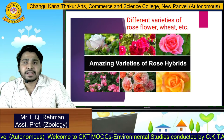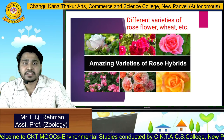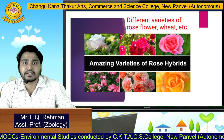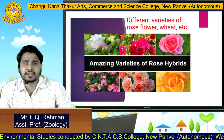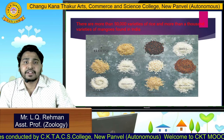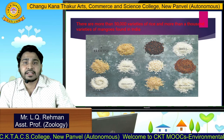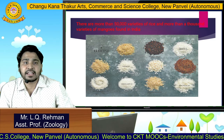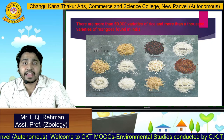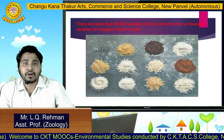In this picture, you can see the amazing varieties of rose hybrids. Similarly, there are varieties of wheat, flour, and many other different flowers also. There are more than 50,000 varieties of rice. In this picture, you can see a few of them. There are also different varieties of mangoes found in India.